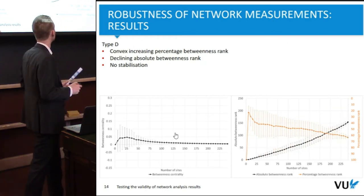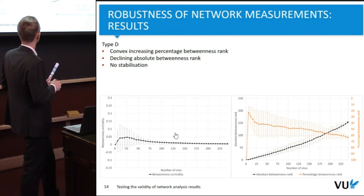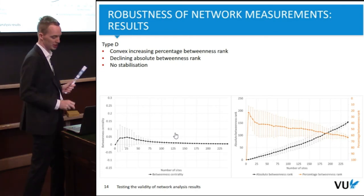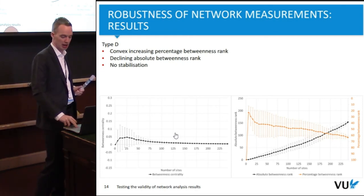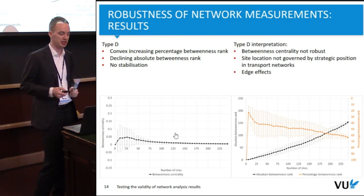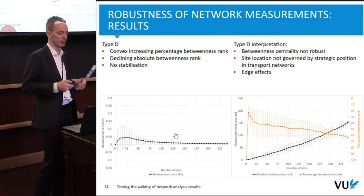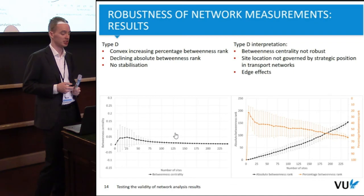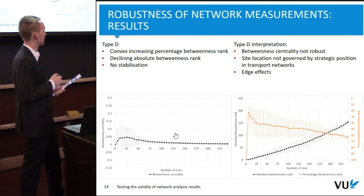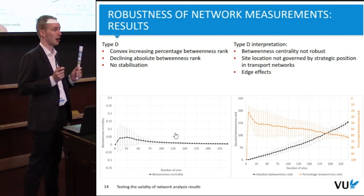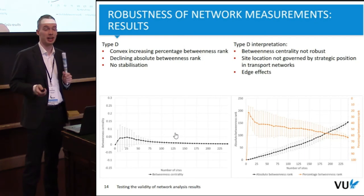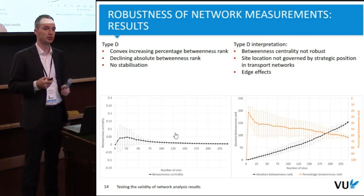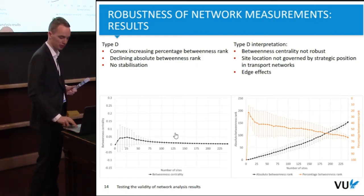Another type has a compact increasing percentage betweenness rank and a declining absolute betweenness rank, with again no stabilization — showing betweenness centrality for this type is also not robust, and location is not governed by strategic position in transport networks. More interestingly, this type seems to appear among sites along the edges of our network, so it could potentially be used to identify edge effects in our transport network research.